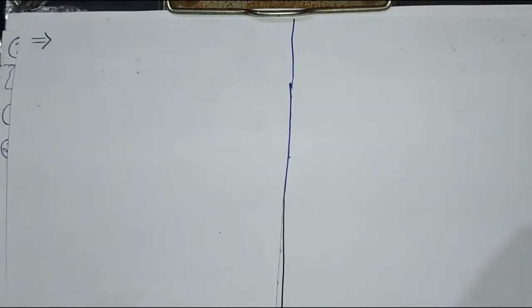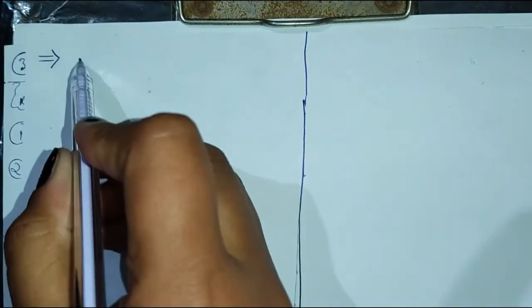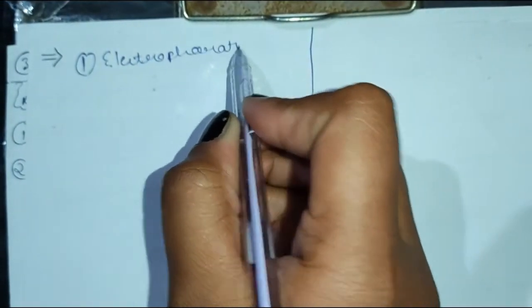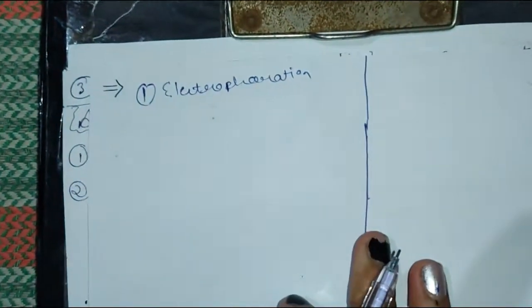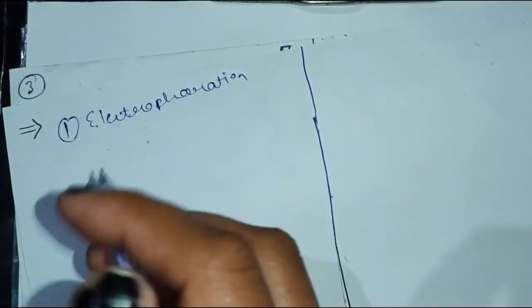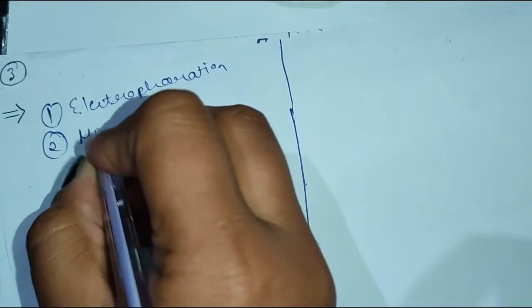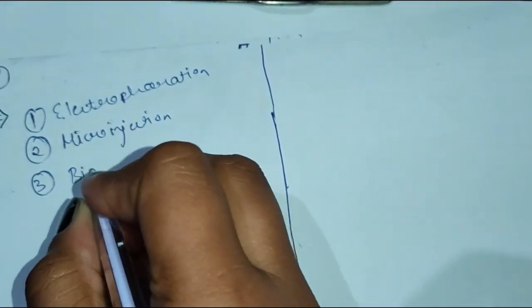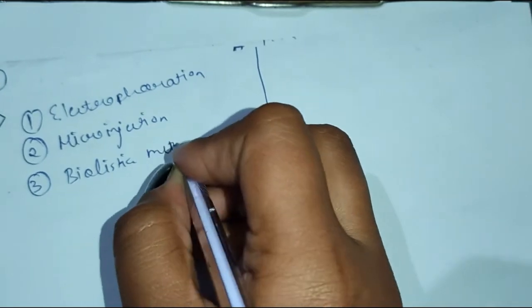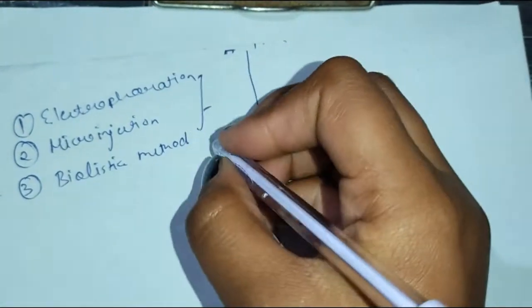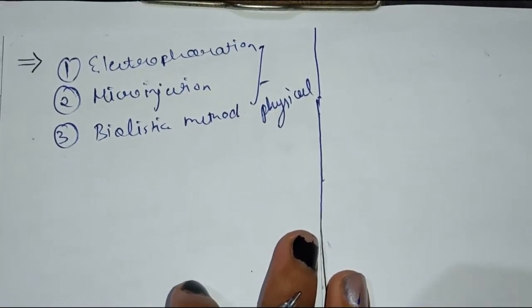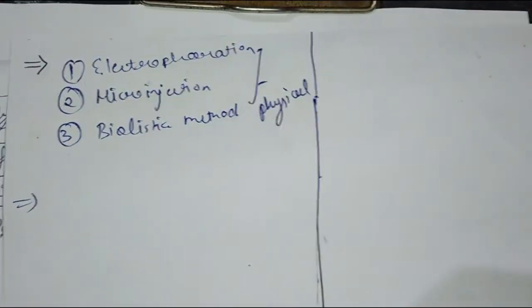In the past few weeks we talked about the physical methods of gene transfer. We explained about electroporation, we explained about micro-injection, and the third one was the biolistic method. Now we will explain about the chemical methods of gene transfer.